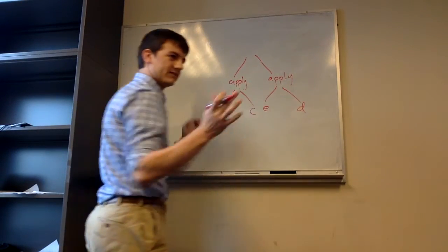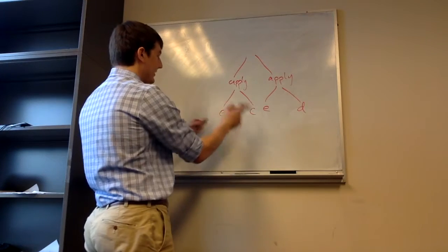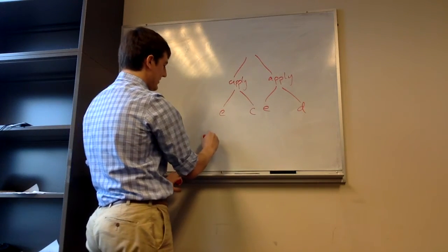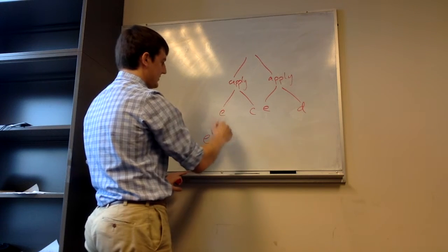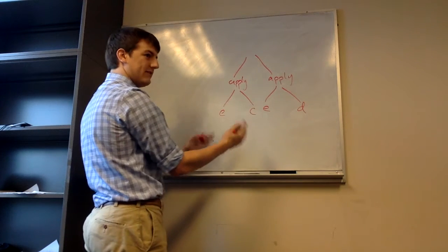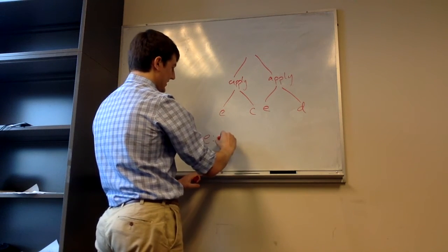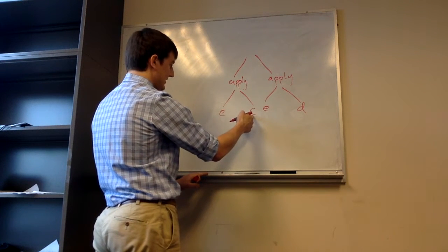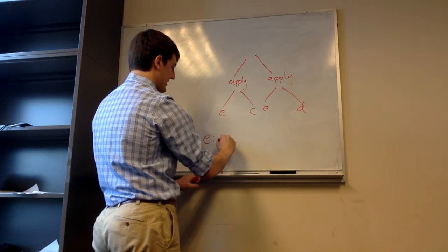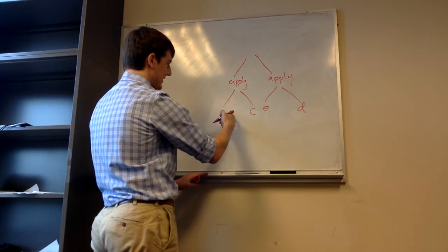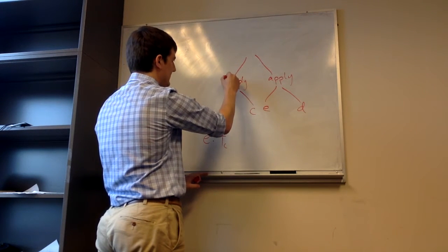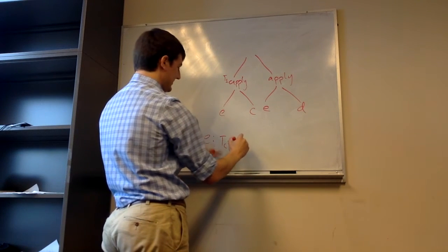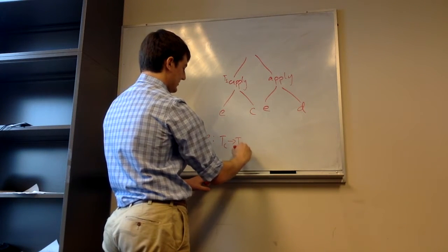And this is D. So we know from each apply statement — not even looking at this one, looking at this apply statement — we know E has the type where it's definitely a function. It takes in some one parameter, so it takes in a type of C, and it returns — let's just say this is T1 — whatever that type of that apply statement is. So it takes in TC and returns a T1.